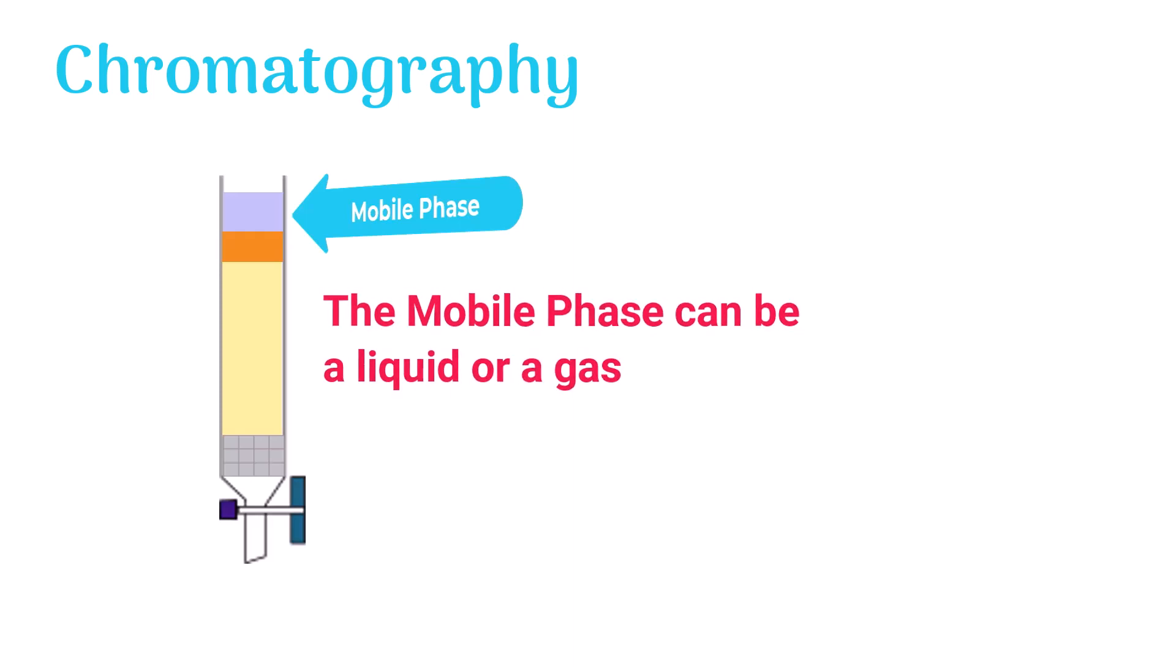In chromatography, the sample is transported in a mobile phase. The mobile phase can be a liquid or a gas.